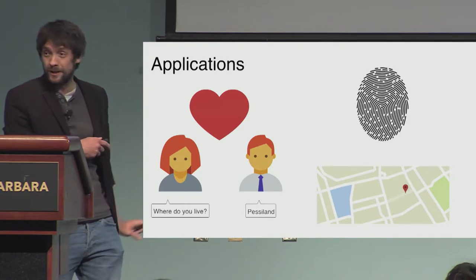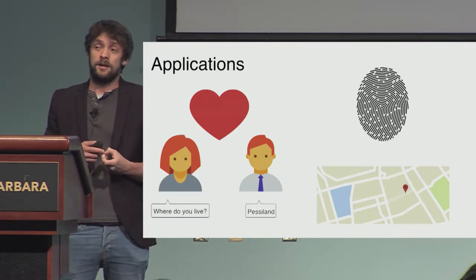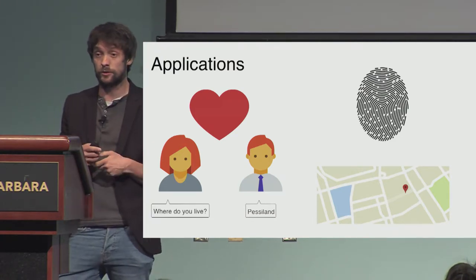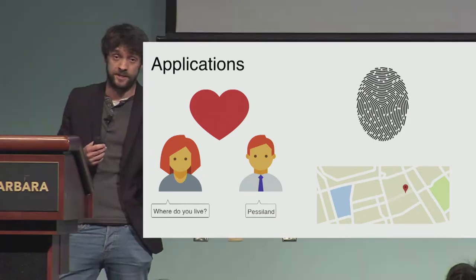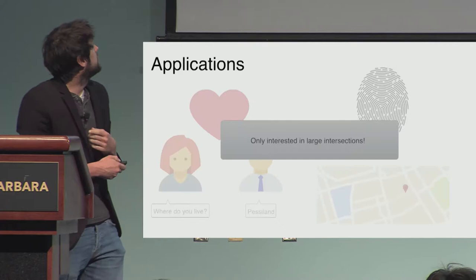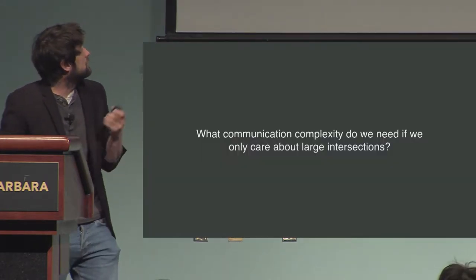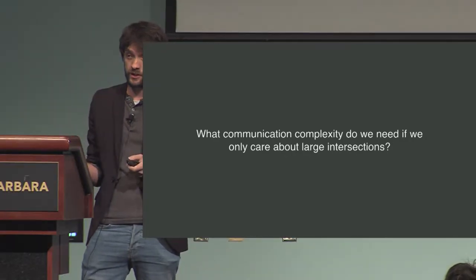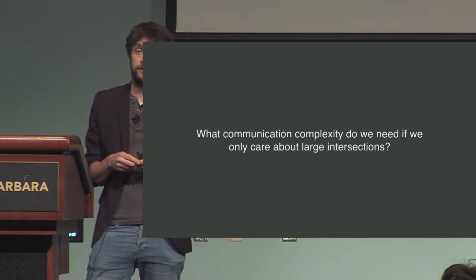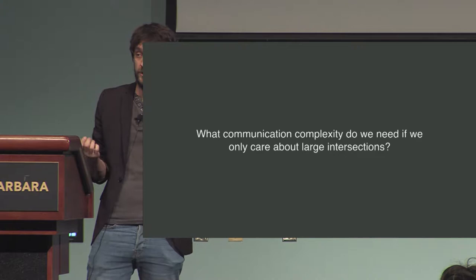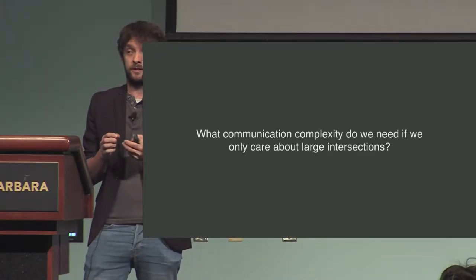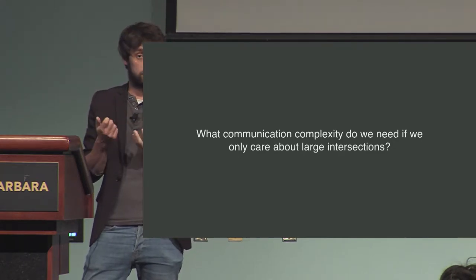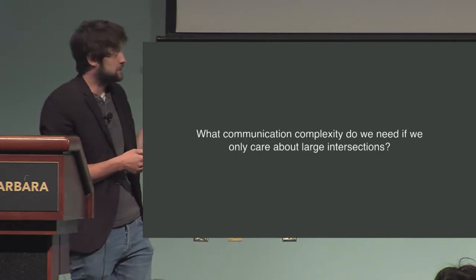The point I'm highlighting with these applications is that quite often we only care about the intersection if it is very large. Sometimes we don't even need to compute the intersection itself — we only care about the bit that tells us whether the intersection is large or small. A natural question is: if we restrict the problem to only wanting a PSI protocol for large intersections, can we get more efficient protocols? For general PSI we know we have to communicate something linear in the set size.